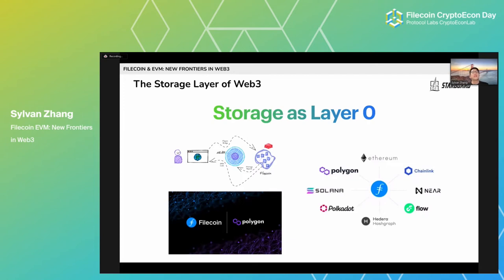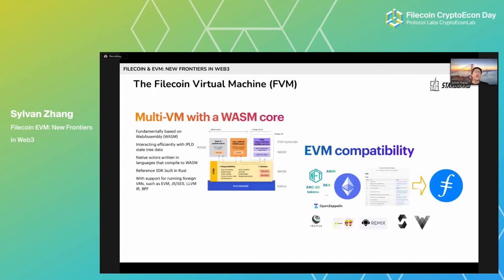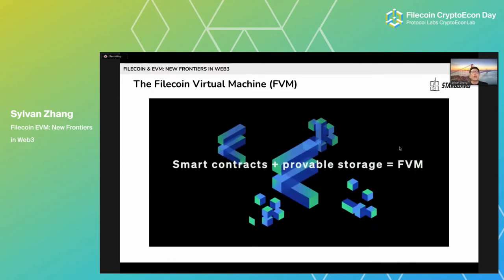In order to access programmability, developers currently use bridges to other programmable blockchains like Ethereum and others. The Filecoin team is working very hard to bring general programmability to Filecoin, and there has been tremendous progress with the development of the Filecoin Virtual Machine, or FVM. The FVM is a WASM-based polygon of execution environment, designed to support both native Filecoin actors in languages that compile to WASM, and also foreign runtimes such as EVM. This means Filecoin will bring together smart contracts and provable storage on one network.